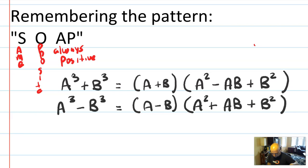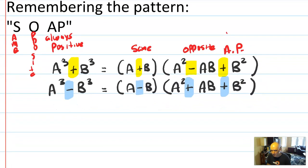SOAP stands for same, opposite, and then always positive. And what SOAP refers to are the signs. Same, opposite, and always positive. And when we say same, what do we mean? We mean the same as whether it was plus or minus in the original thing that it was asking you to factor. So we have a³ plus b³ is a plus b, then a² minus ab (opposite), plus b² (always positive). For the minus, we have a³ minus b³ turns into a minus b (same sign), a² plus ab (opposite), and then always positive, plus b².